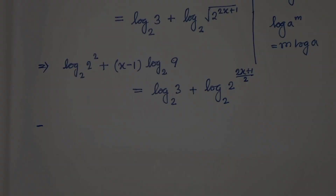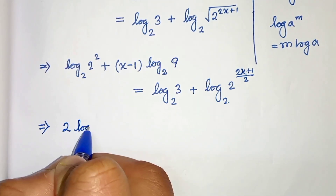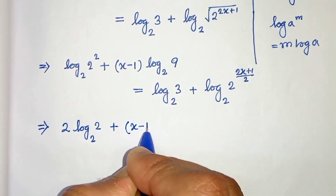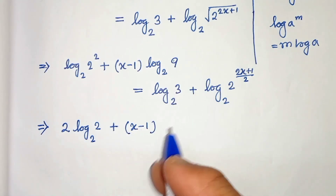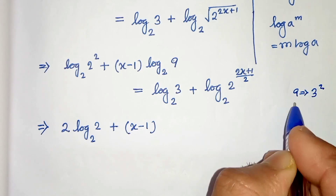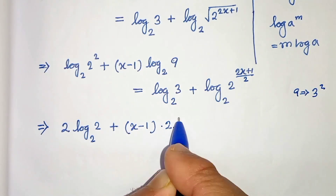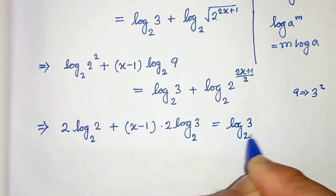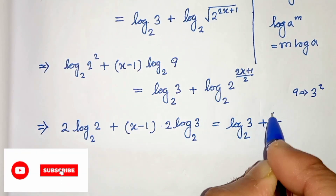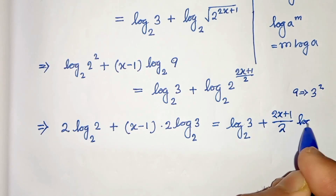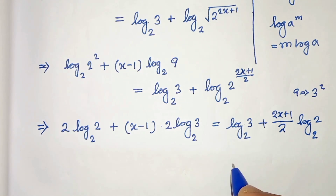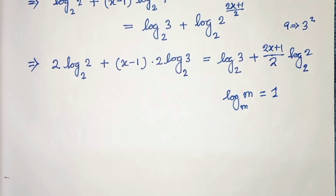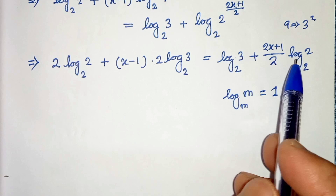Simplifying further: 2 comes before log of 2 with base 2, plus x minus 1. We can write 9 as 3 squared, so log of 9 gives 2 log of 3 with base 2. On the right side we have log of 3 with base 2 plus 2x plus 1 divided by 2 times log of 2 with base 2. Now we know log of m to base m equals 1, so log 2 with base 2 equals 1 on both sides.